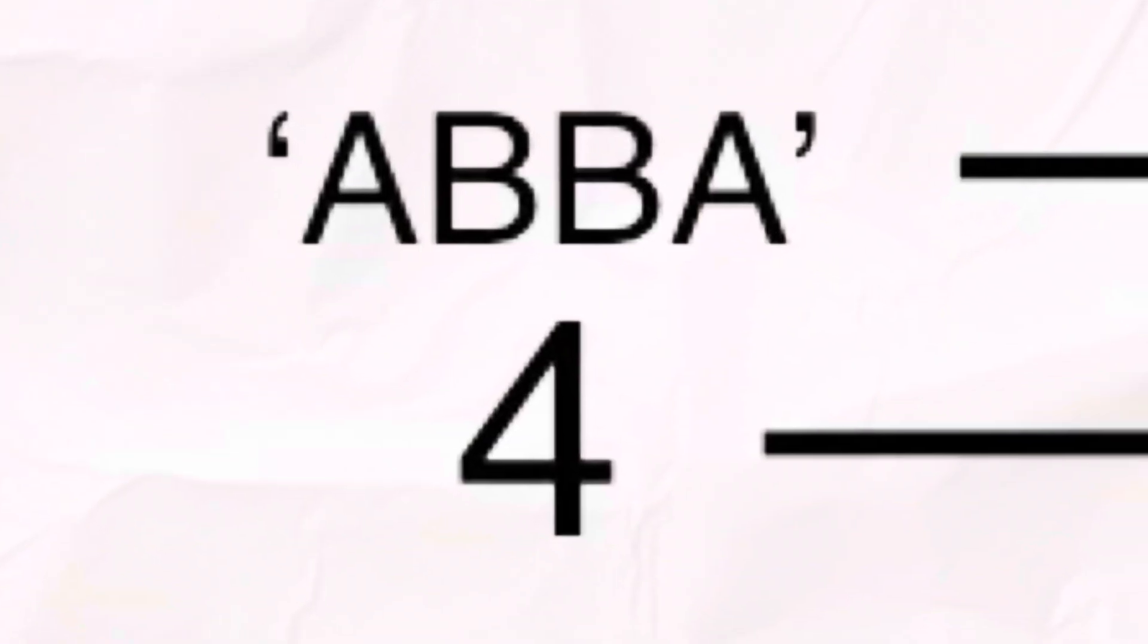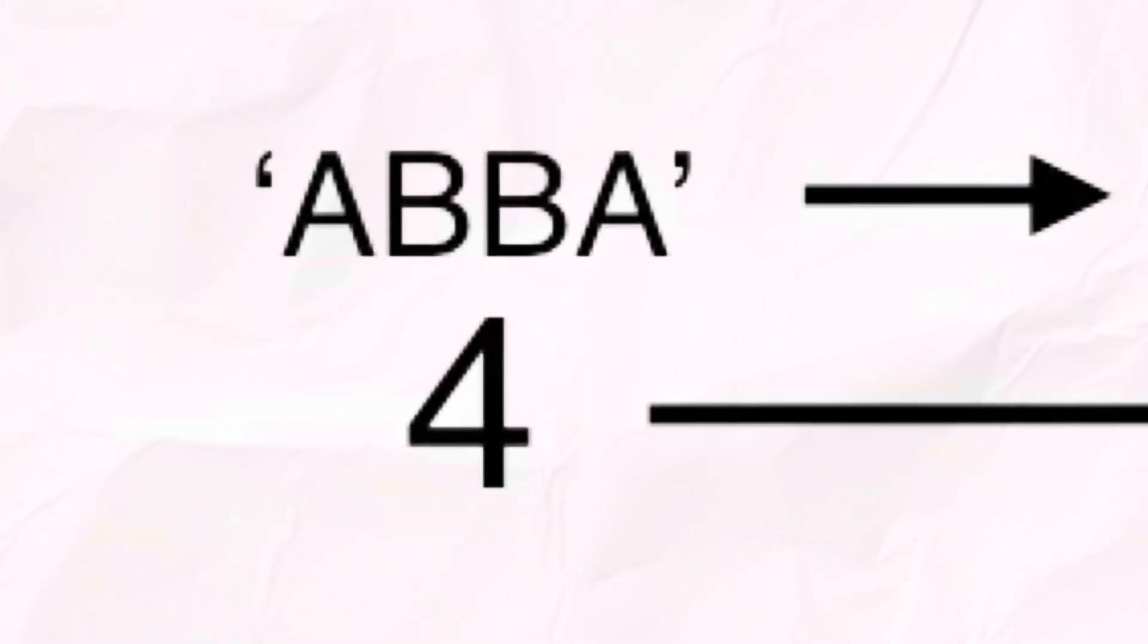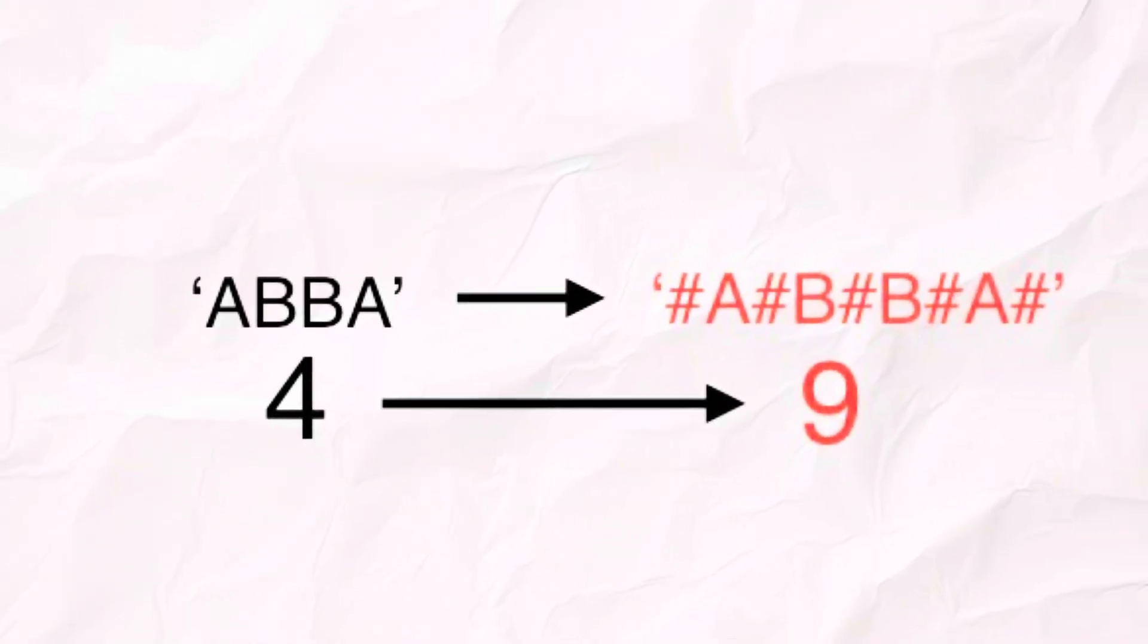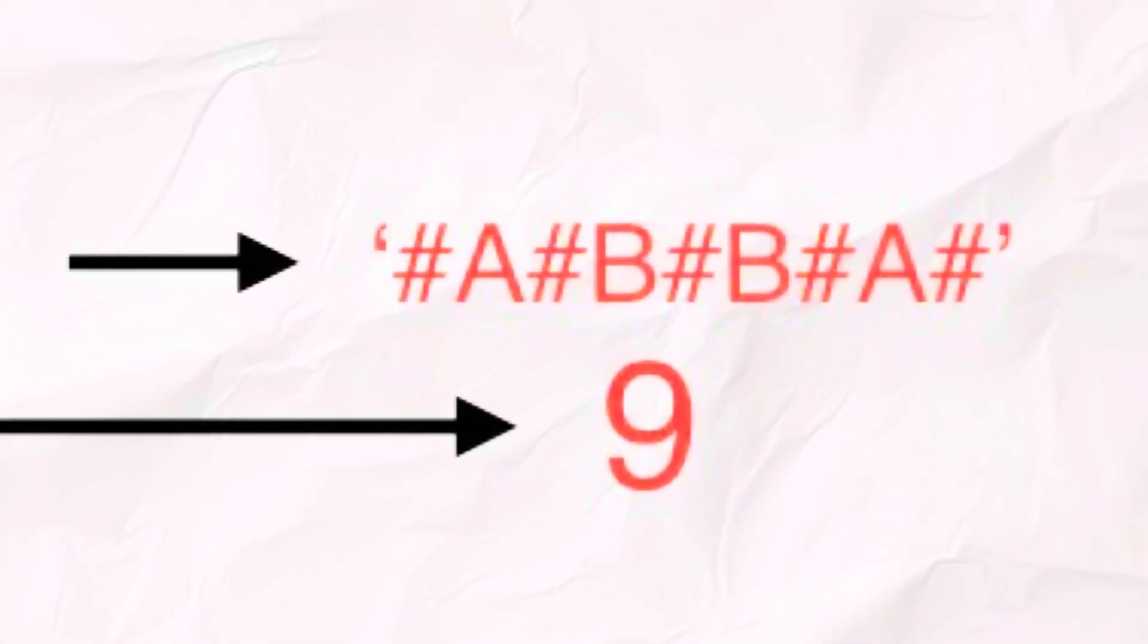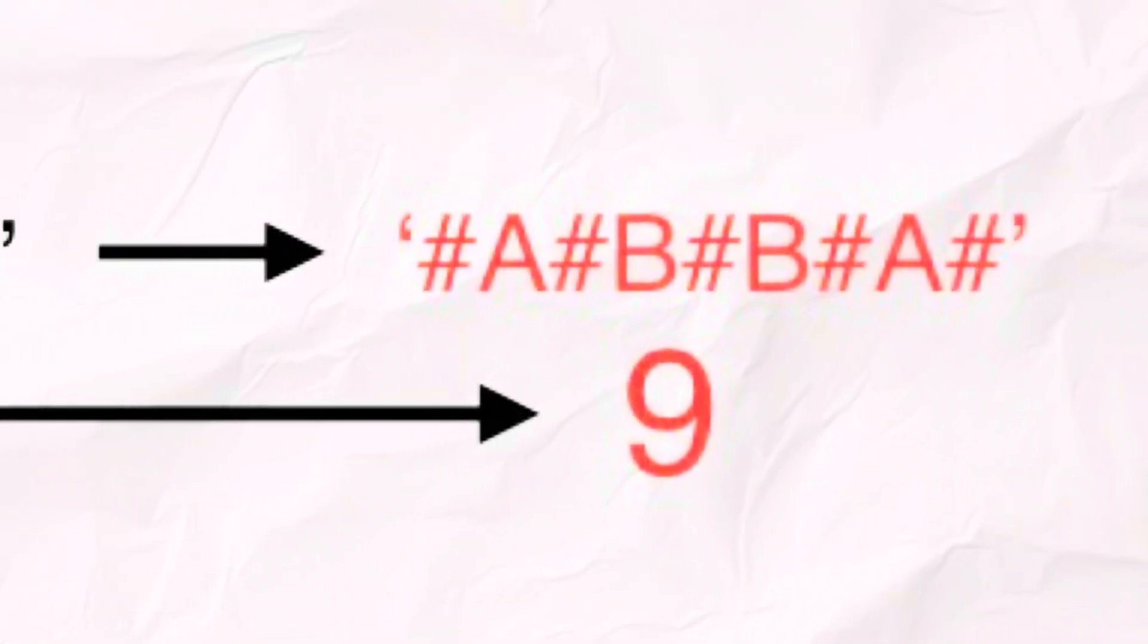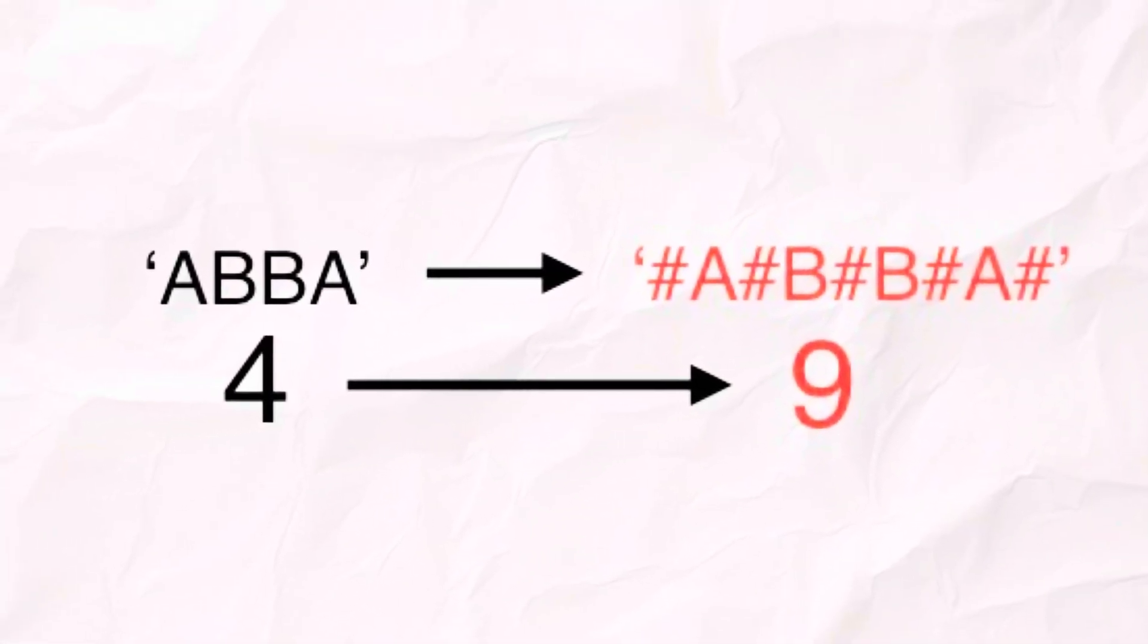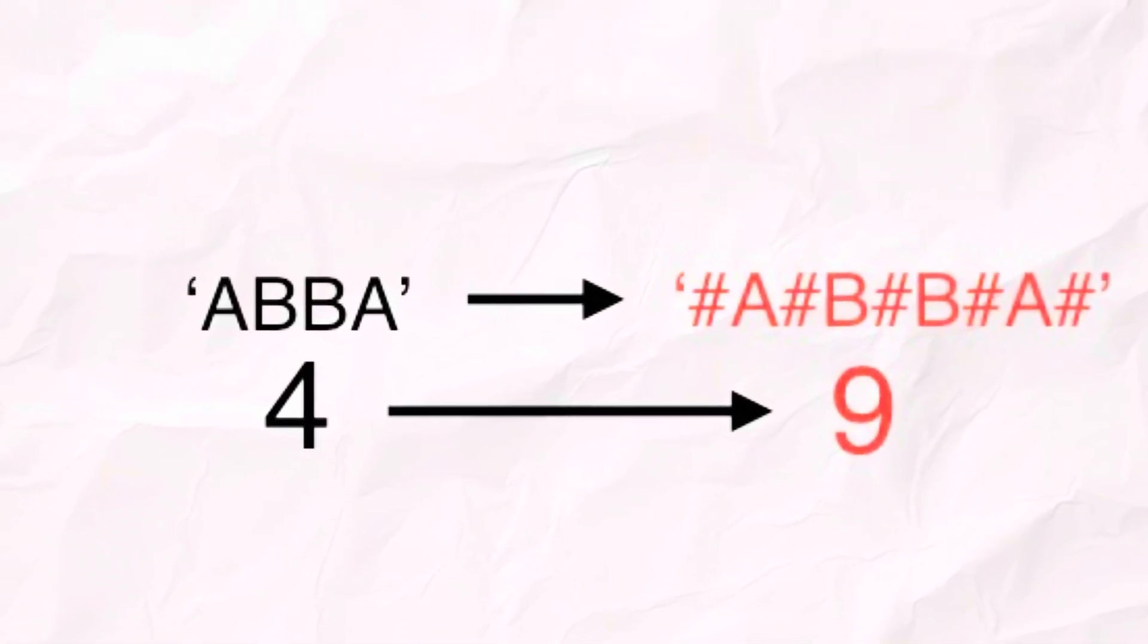The first step is that we have to transform the original string by inserting a special character like, for example, hashtag between every letter and at the end of the string as well. Why? Because this makes every possible palindrome odd length. So we don't have to handle even or odd separately.